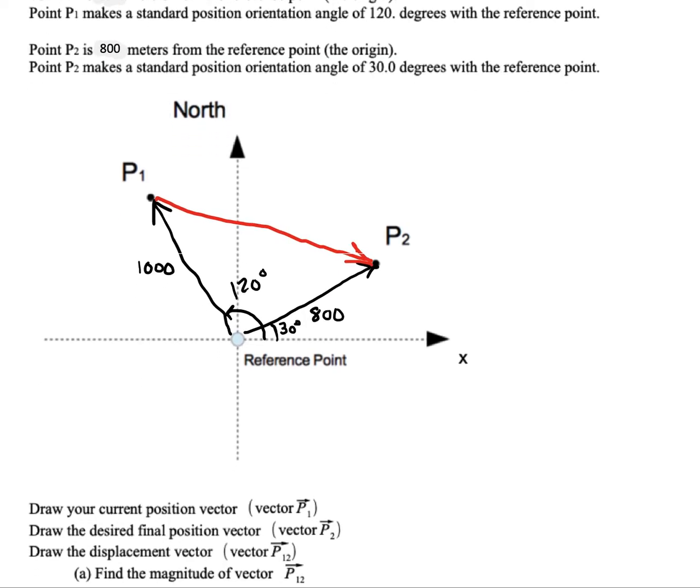The instructions say draw your current position vector P1, I did that. Draw the desired final position vector P2, that would be this. And the displacement vector P from 1 to 2 is what that means. So P12 is this guy. We want to find the magnitude of vector P12.